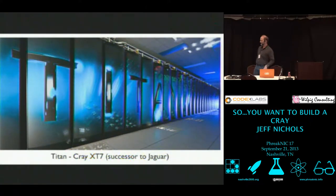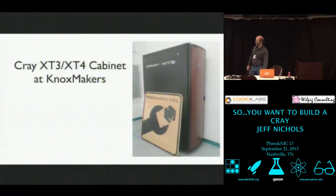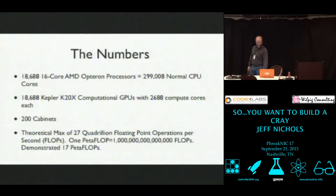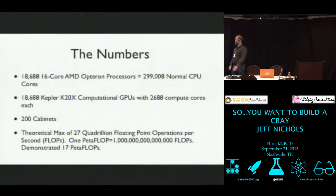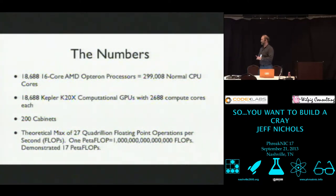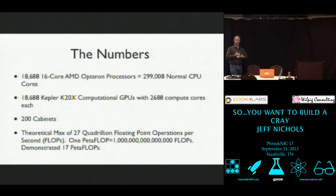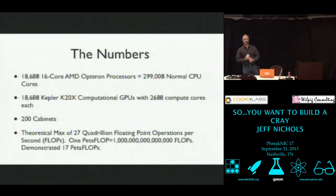I worked on Jaguar, so I'll often flip back and forth. Let me give you some of the numbers to impress you. In Titan there are 18,688 sixteen-core AMD Opteron processors, for a total of almost 300,000 cores. For each CPU or processor, there's a matching K20X GPU — that's a computational GPU from NVIDIA — and each of those GPUs has a little over 2,500 cores by themselves, which multiplies out to a little over 50 million cores.